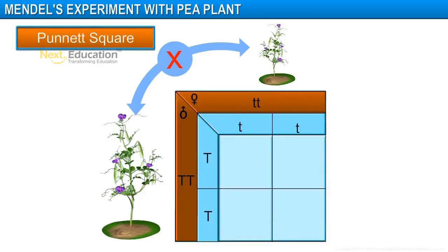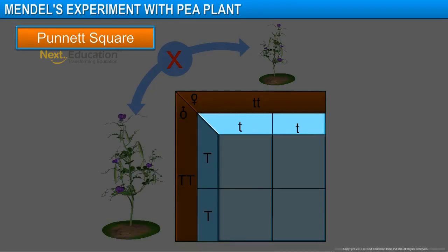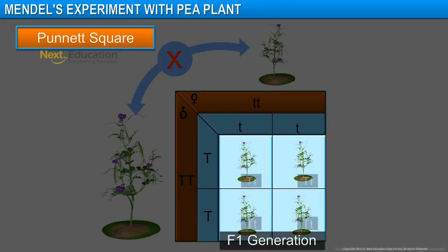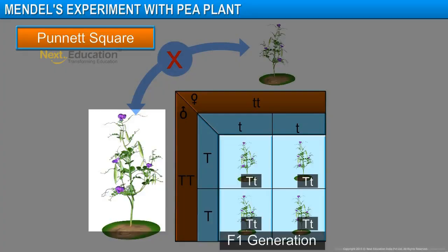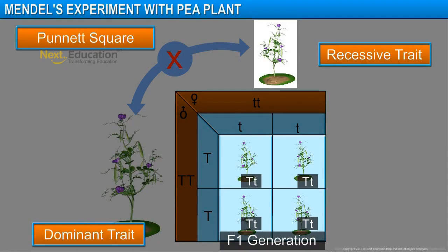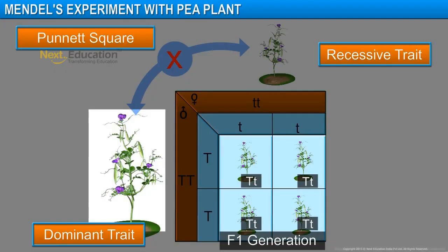Let's draw a Punnett square to find the inheritance. The Punnett square shows the gametes produced by the parental plants — uppercase T and lowercase t. The F1 generation has all uppercase T and lowercase t progeny. In the first generation, or F1 progeny, all of the plants were tall. This means that only one of the parental traits was visible. The trait which is visible in F1 generation is called the dominant trait, and the one which remains suppressed is known as the recessive trait. Here, tallness is the dominant trait and shortness is the recessive trait. All the F1 plants were tall (Tt), as that of the parent tall plant phenotypically.